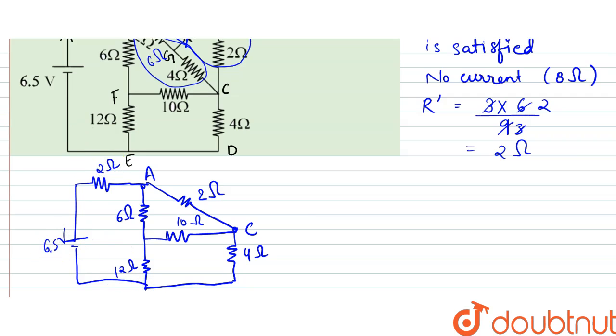And that is connected to 6.5 volt. This is our 2 ohms. And this is F. This is E. This is D.